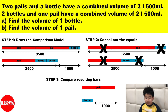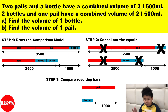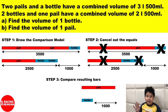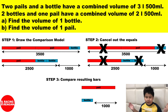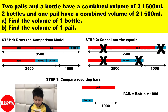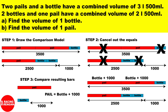After canceling, you are left with one pill and one bottle, and the 1000 is still on your paper. That tells you the pill is 1000 ml more than the bottle. Step three: compare the resulting bars. The pill has 1000 ml more than the bottle, so pill equals bottle plus 1000.